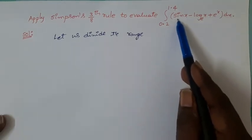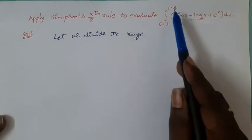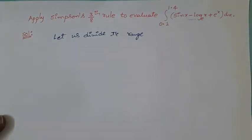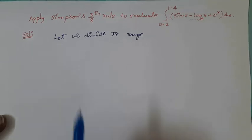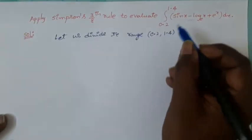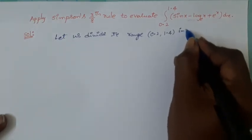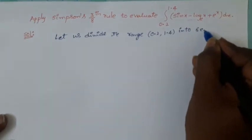We should find the definite integral of this function within the limits 0.2 to 1.4. We can apply Simpson's 3/8 rule only when the number of subintervals of the given range is a multiple of 3. So let us divide the range 0.2 to 1.4 into 6 equal parts.